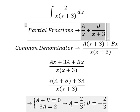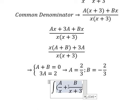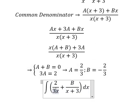We put A and B in here. A equals 2 over 3, B equals negative 2 over 3.